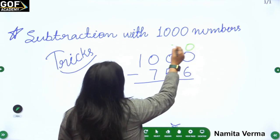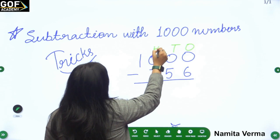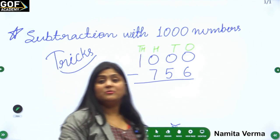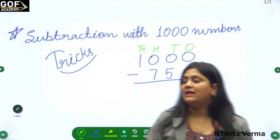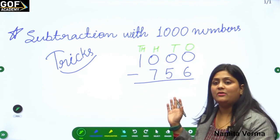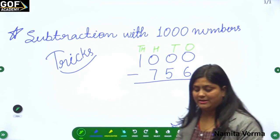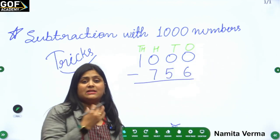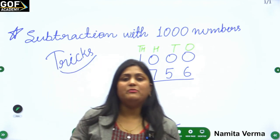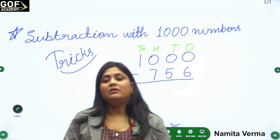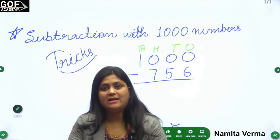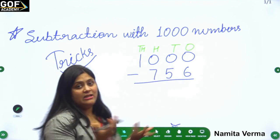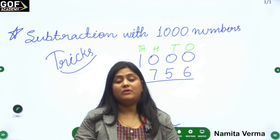Ones, tens, hundreds, and thousands — we all know these are the place values of our numbers. Now when we start solving any subtraction or maths problem, we have to start from the ones place.